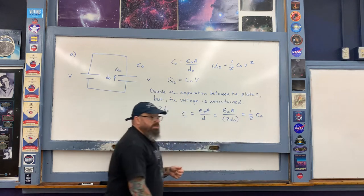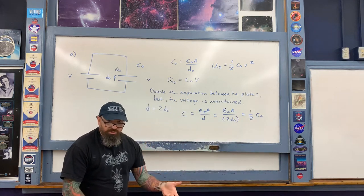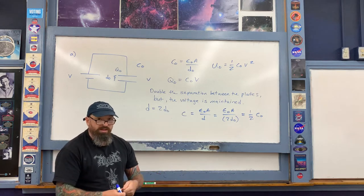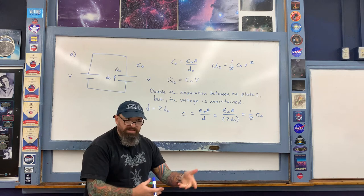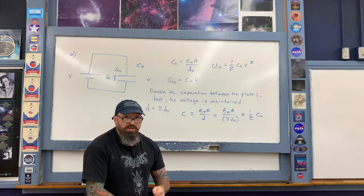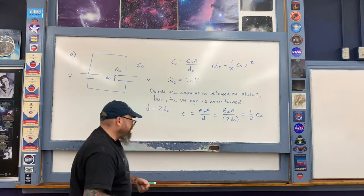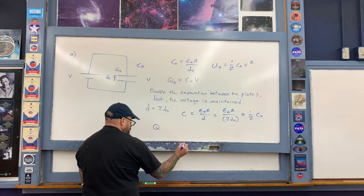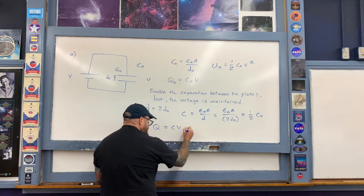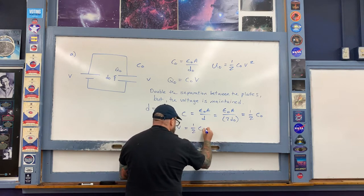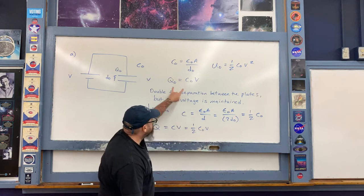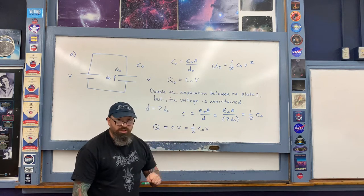This means the charge gathered on the plates must change — charge flows from the plates back to the battery in order to maintain the voltage. The new charge Q = C·V = (½C₀)·V = ½Q₀.